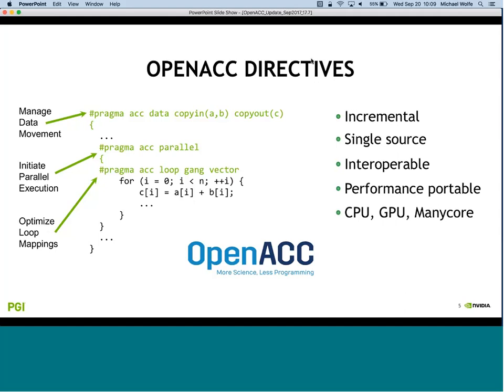At the outer level there's data management, which is specific to GPUs where you have separate system memory and device memory. The PGI compiler does a lot of work for implicit data management where it can, but the penalty for bad decisions is high, so OpenACC also allows users to insert directives to control when data gets moved from system memory to device memory and back. For example, a directive can say copy A and B from system memory into the device and copy the result out.